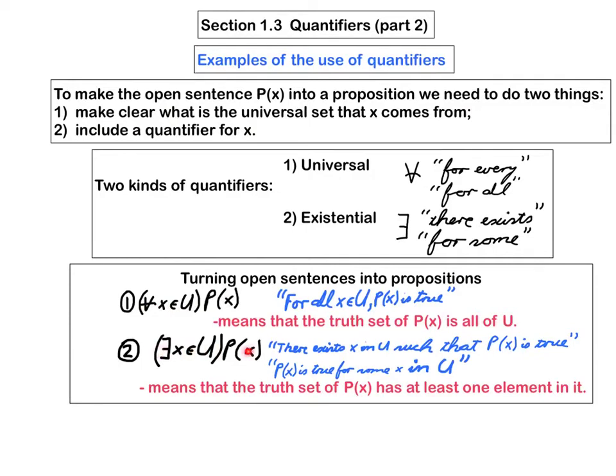This one is read there exists an x in U such that P(x) is true, or we could say P(x) is true for some x in U. The meaning of that is that the truth set of P(x) has at least one element in it. It is non-empty. And so what I've done is I've made use of the information in this box, or the technique I described in this box, in order to turn an open sentence into a proposition.